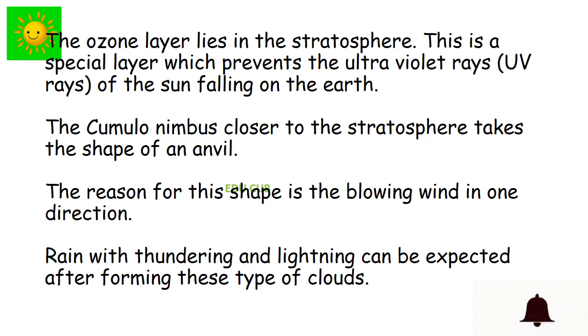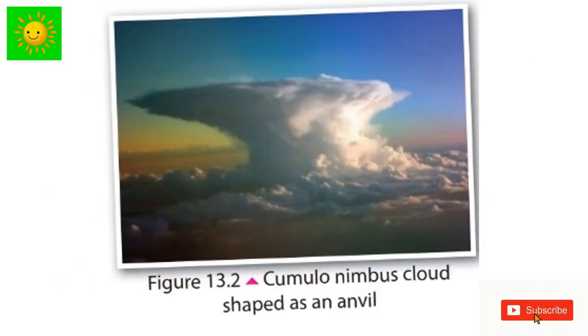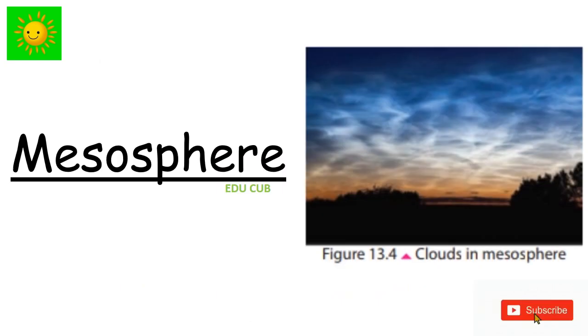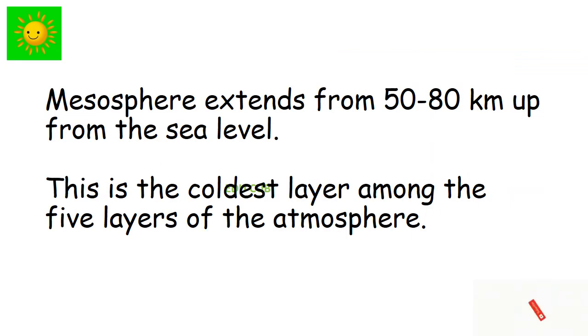The cumulonimbus closer to the stratosphere takes the shape of an anvil. The reason for this shape is the blowing wind in one direction. Rain with thundering and lightning can be expected after forming these types of clouds. This is cumulonimbus cloud shape as an anvil.